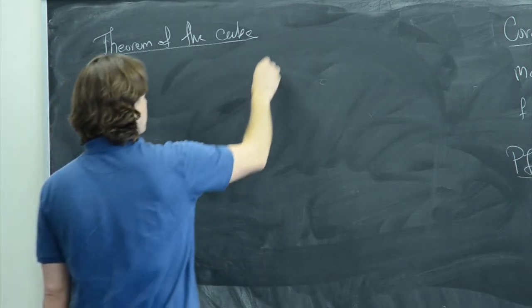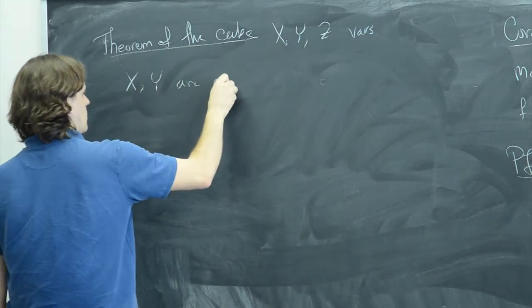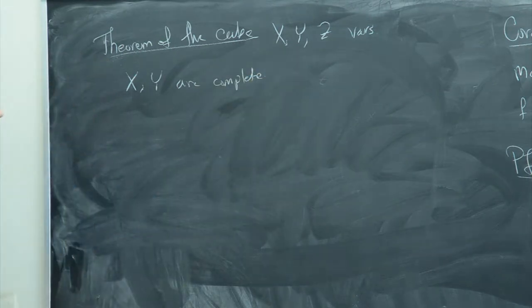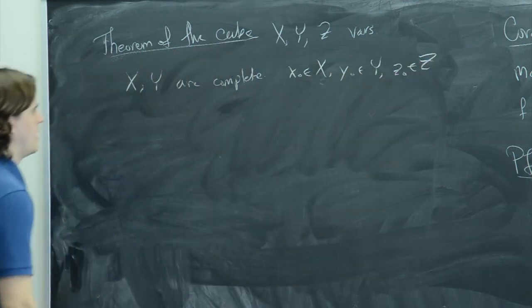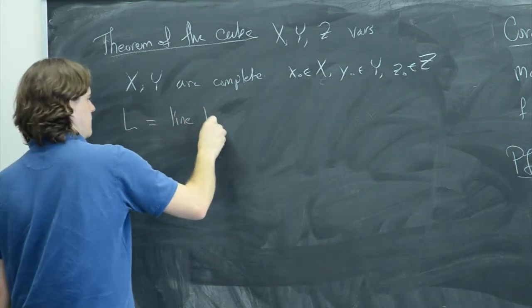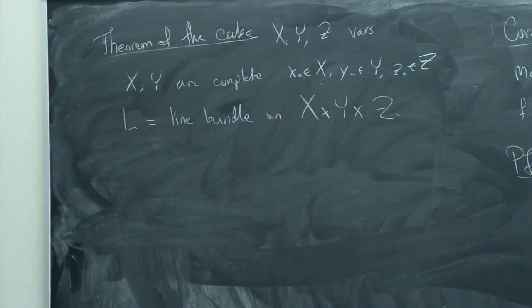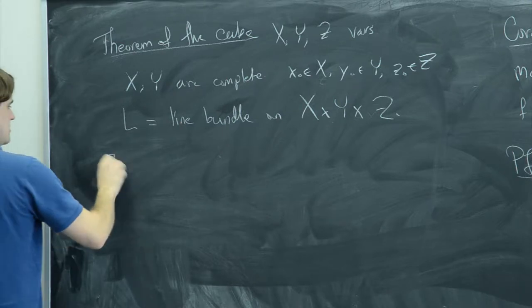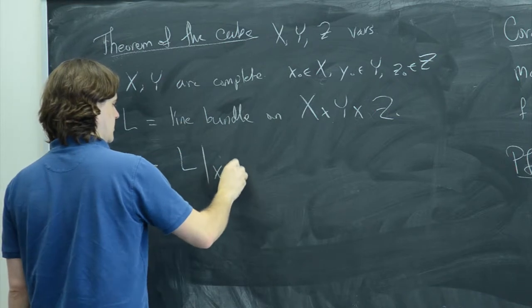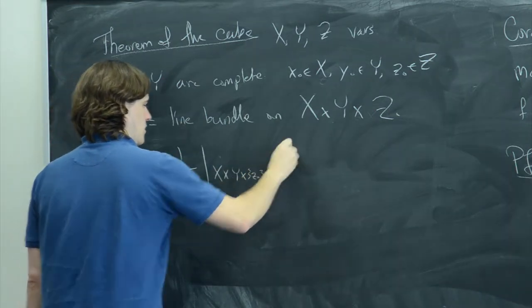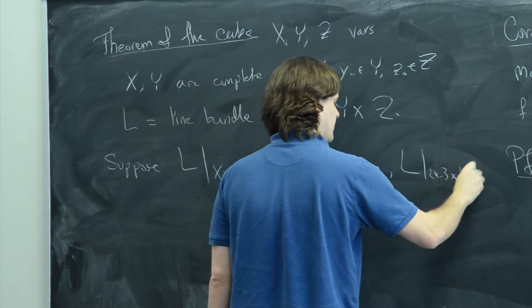The Theorem of the Cube is again a general statement. We have three varieties X, Y, and Z, and X and Y are complete, with base points x₀, y₀, z₀. We have a line bundle L on the product X × Y × Z. Suppose that L restricted to X × Y × {z₀}, L restricted to X × {y₀} × Z, and L restricted to {x₀} × Y × Z are all trivial. Then L is trivial.